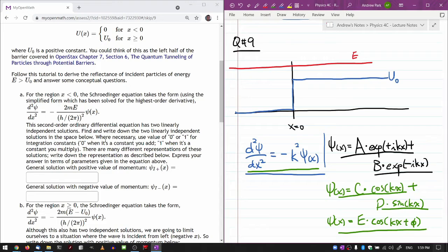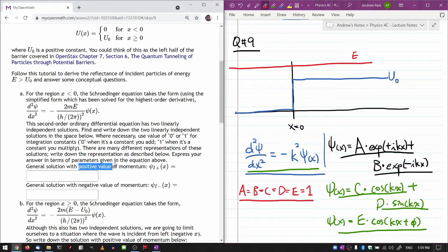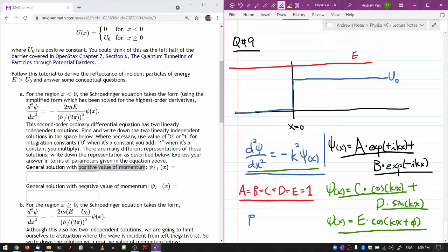In the question text I'm giving you enough descriptions to narrow down these possible forms of solutions into a particular one that can actually be graded. It's saying where necessary use the value of zero or one for integration constant. So whatever I do I'm going to end up with something like a equals b equals c equals d equals e equals one. And then here it says general solution with positive value of momentum. And this is where it helps to remember the momentum operator. Momentum operator is minus i times h bar times the derivative with respect to position.